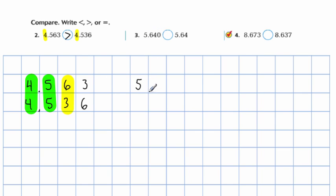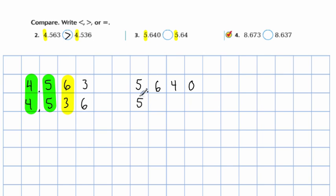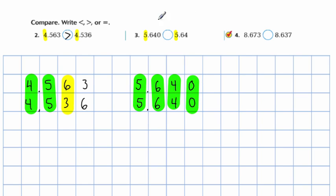Here's the second problem: 5.640 and 5.64. A lot of people will line things up from right to left, because we've been lining them up on the right to add and subtract forever. But when you have decimals, you cannot subtract thousandths from hundredths — so that's wrong. What's right is to identify your ones place. The fives should be lined up one on top of the other, and then that lines up the decimals, tenths, hundredths, and so on. Anytime you have a blank space on the end of a decimal, you can just add a zero. Comparing: ones the same, tenths, hundredths, thousandths all the same. If all of those are equal, then one number equals the other, even though they don't look exactly alike.